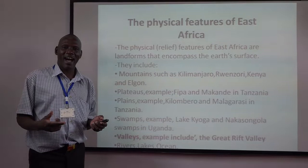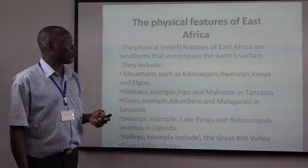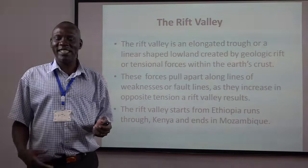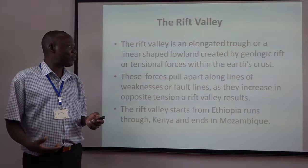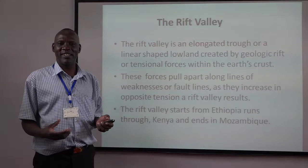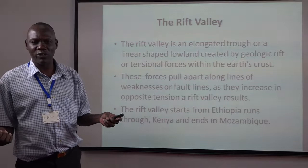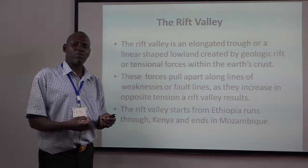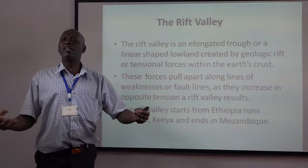What is a rift valley in East Africa? A rift valley is defined as any elongated trough or a linear-shaped lowland. This linear-shaped lowland is created by a geological rift — that is when the earth moves apart from each other due to tensile forces within the earth's crust. As the earth pulls apart, it creates a very huge valley, and over time this valley extends until it forms what we call a rift valley.